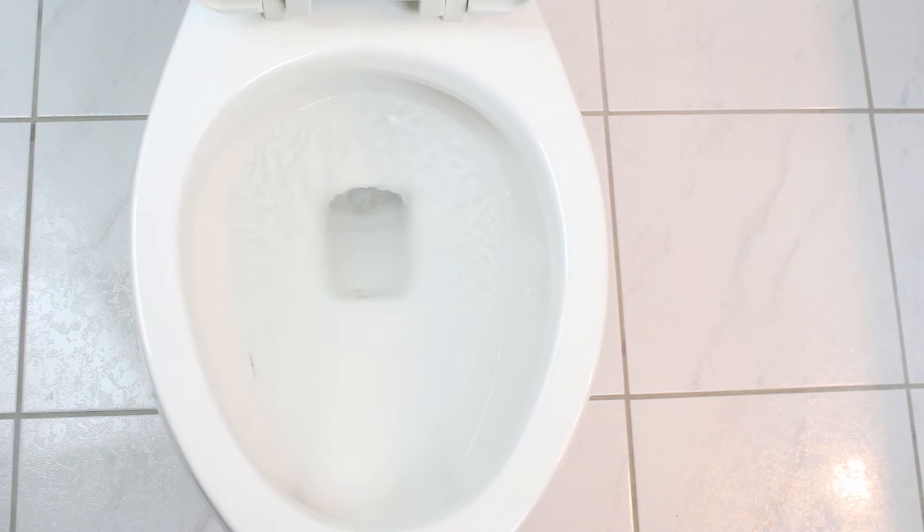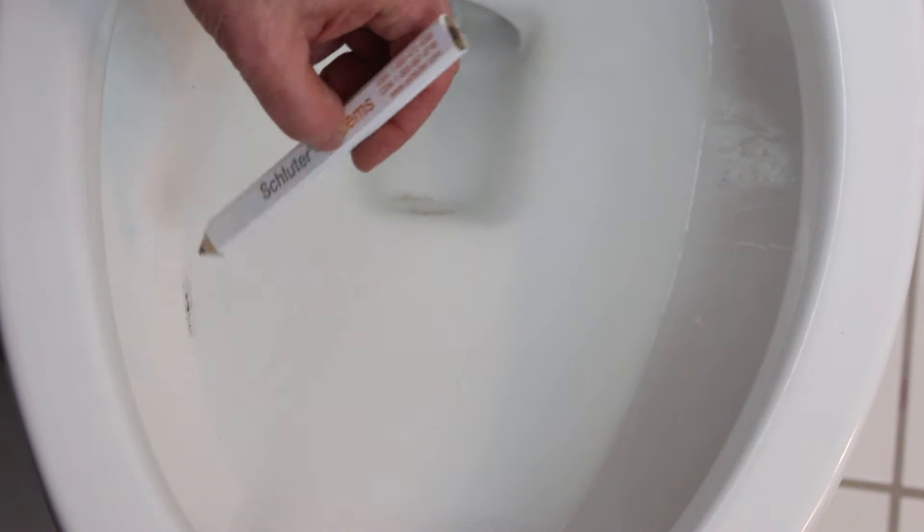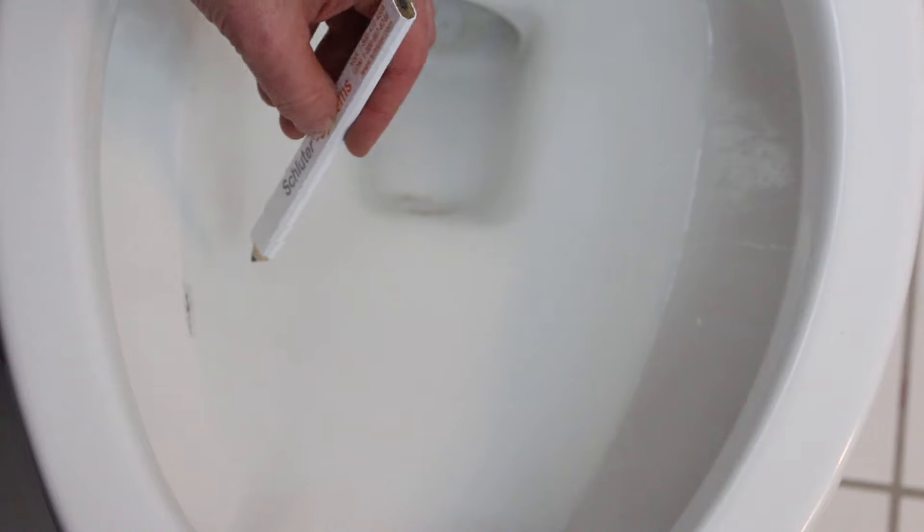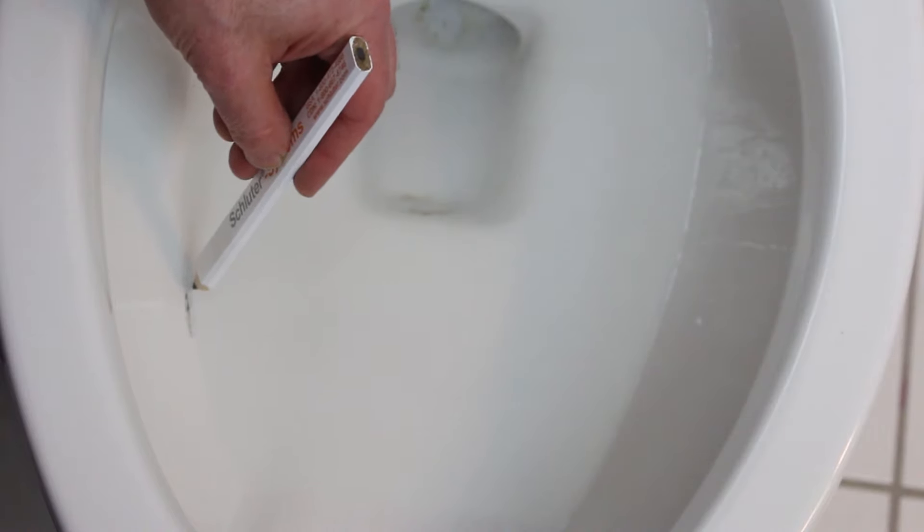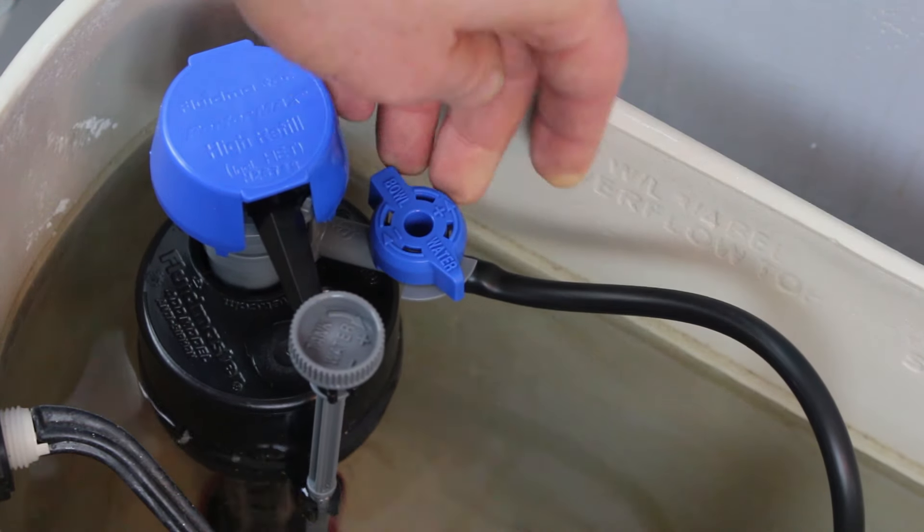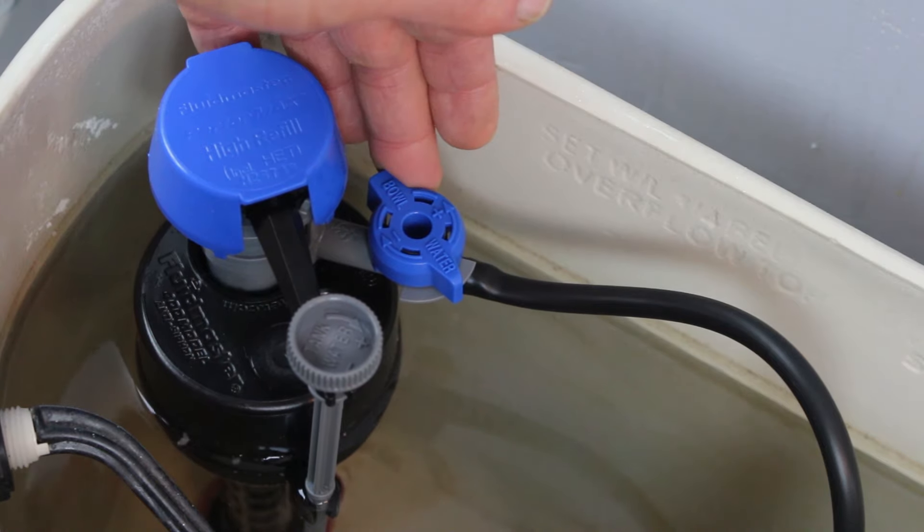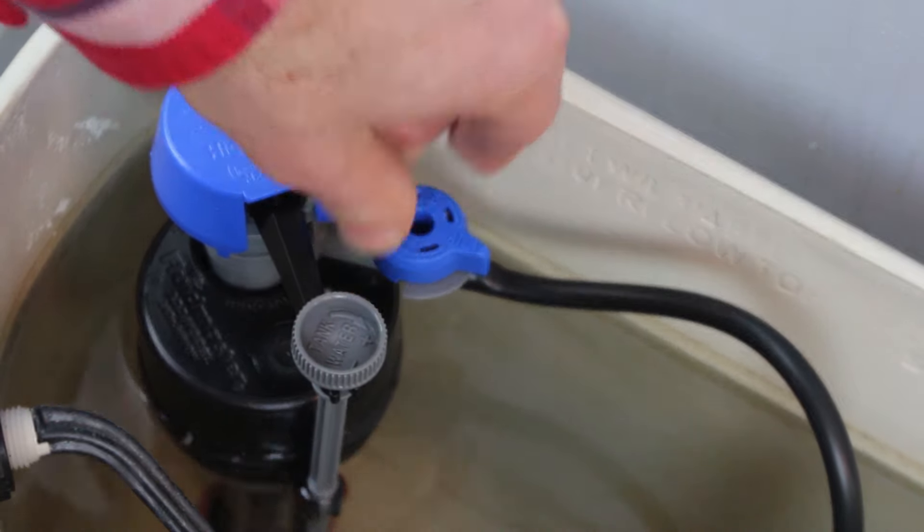Now flush the toilet and see where it refills in the bowl. If the water line is above your pencil mark, there's too much water in the bowl. If it's below that mark, there's too little. You can adjust the height of the water in the bowl with this blue knob that's attached to the 400H.